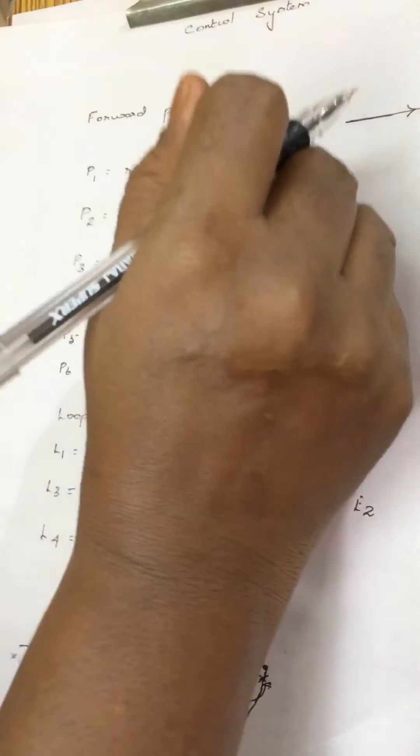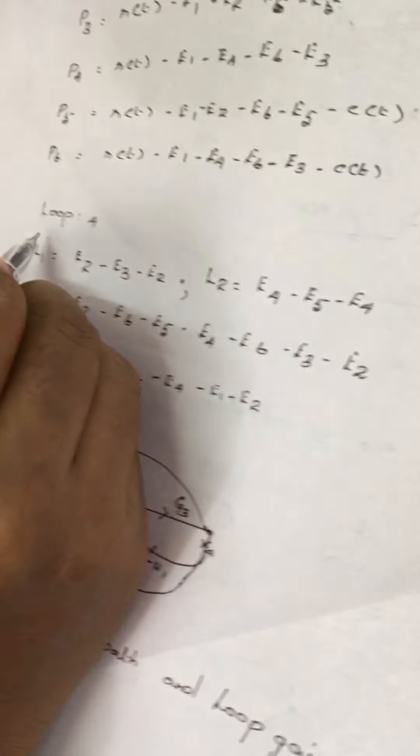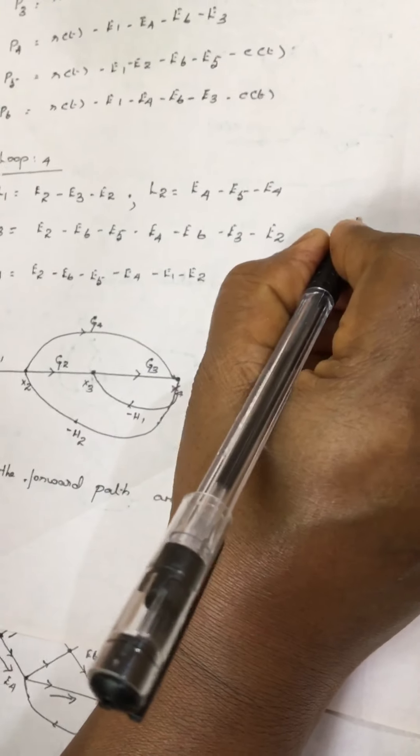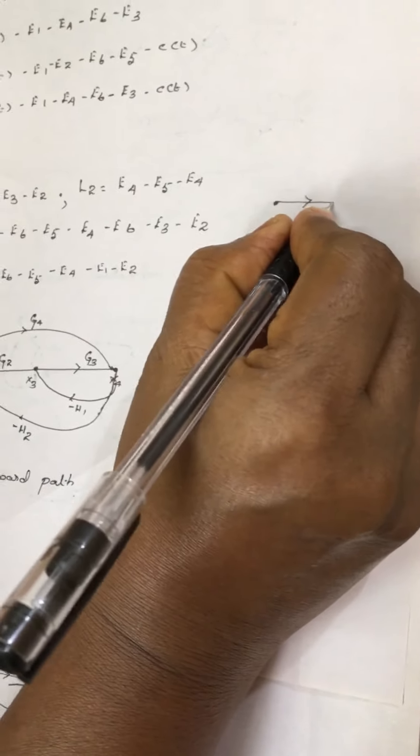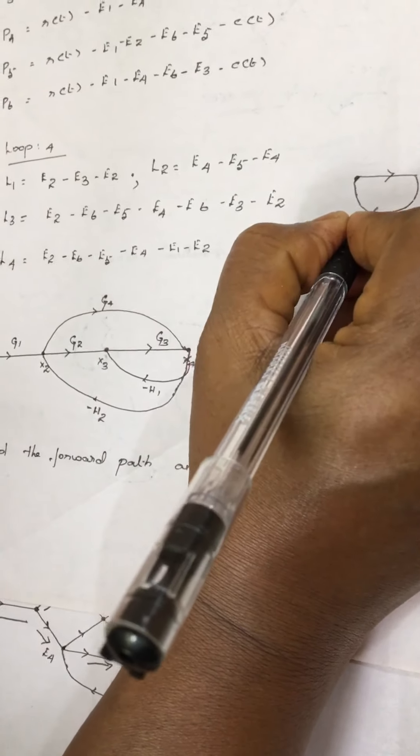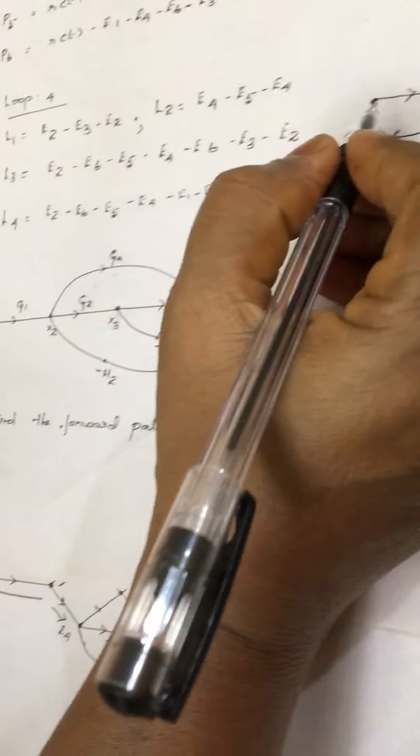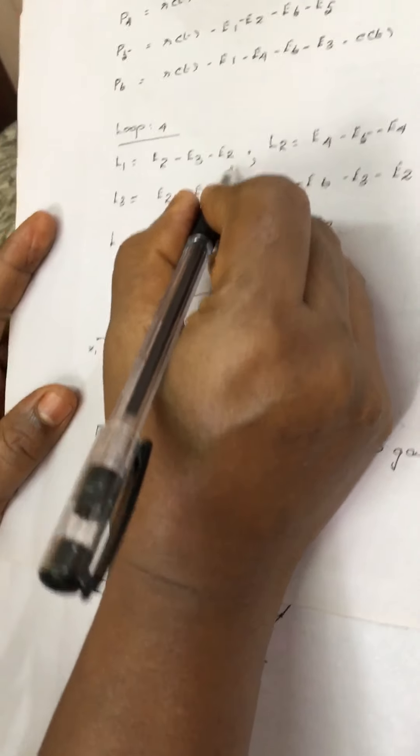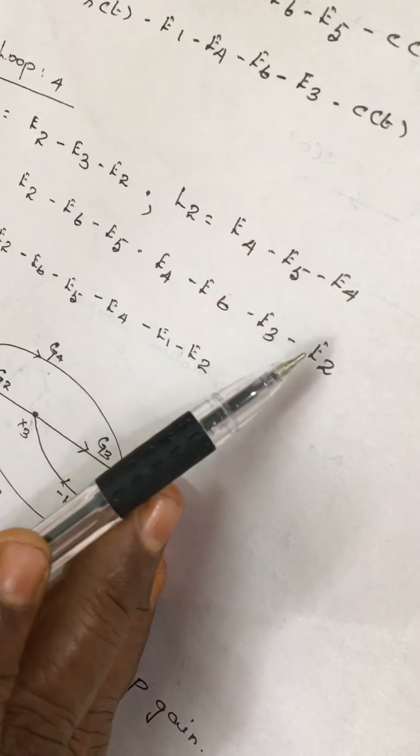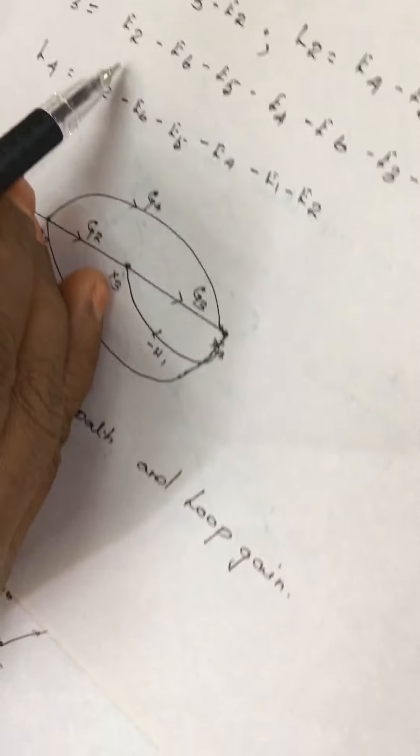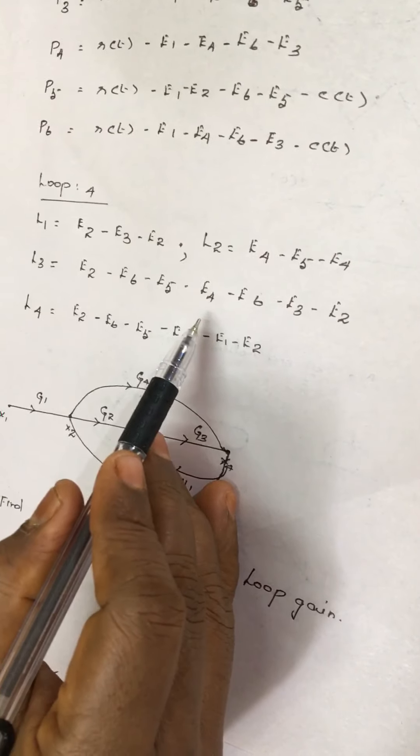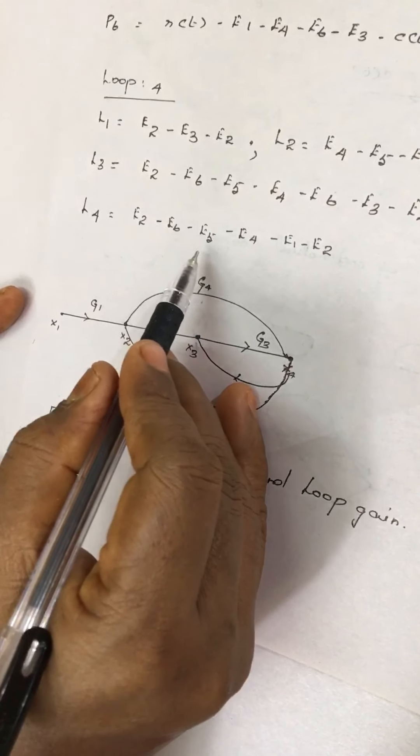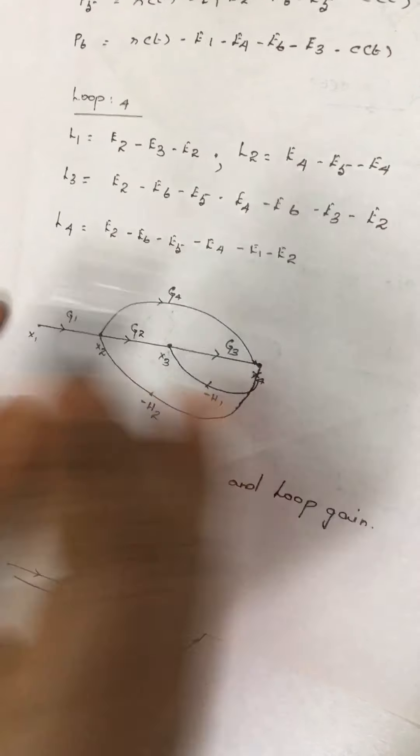The number of loops in the given diagram is four loops. What is a loop? It starts at a node, moves towards its own direction, and ends at the same node. Here we have loop L1 as E2, E3, E2. L2 equals E4, E5, E4. L3: E6, E3, E2. L4 equals E2, E6, E5, E4, E1, and E2.